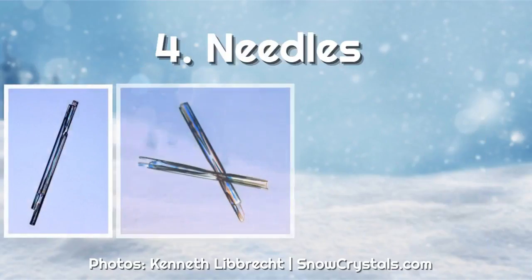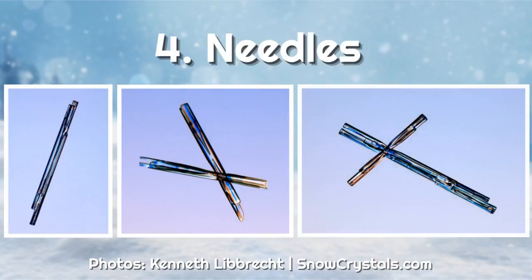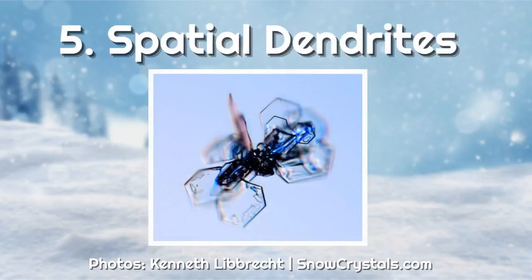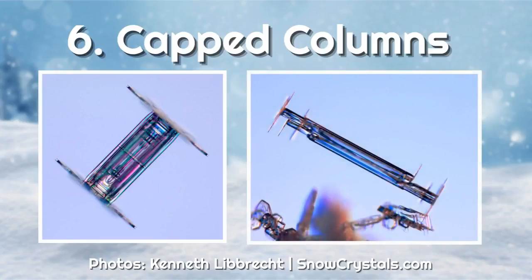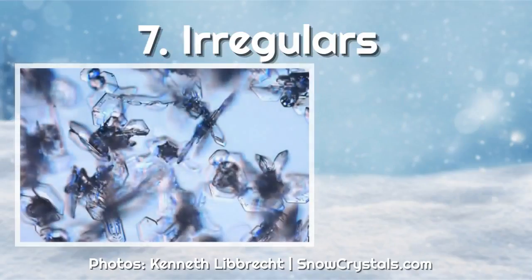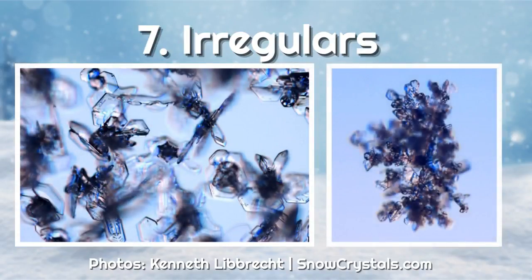Needles? Needles look similar to column crystals, just much thinner. Spatial dendrites? This category describes many individual ice crystals jumbled together to form one three-dimensional shape. Capped columns? These snowflakes kind of look like two wheels on an axle. And irregular? This category basically describes everything else that falls from the sky and cannot be assigned to any of the aforementioned categories.